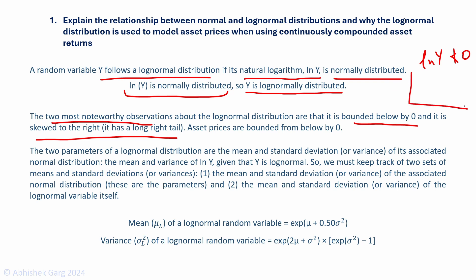If we want to draw the distribution of ln(y), the distribution will have a long right tail and the origin will be zero — meaning the distribution is bounded below by zero with a long right tail. Similarly, asset prices — whether a stock price or real estate price — are bounded below by zero.